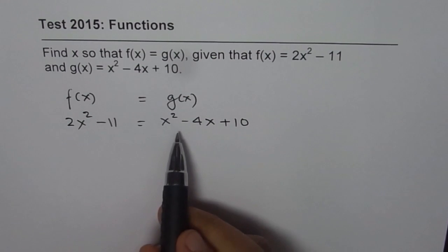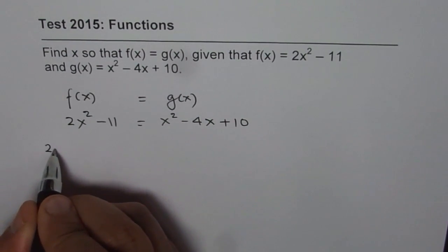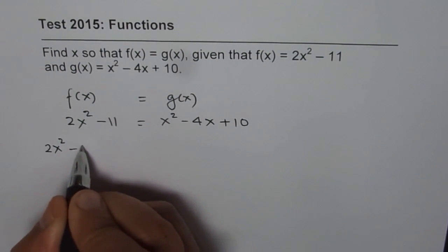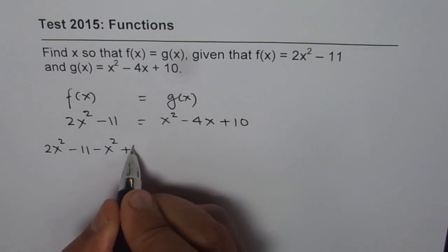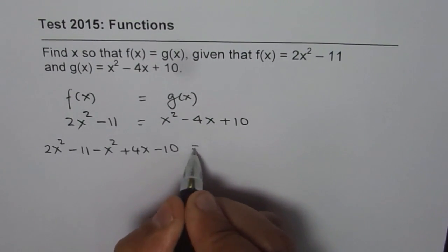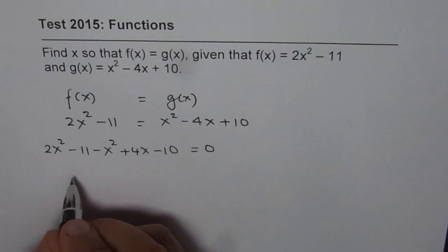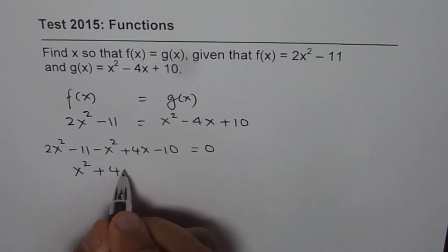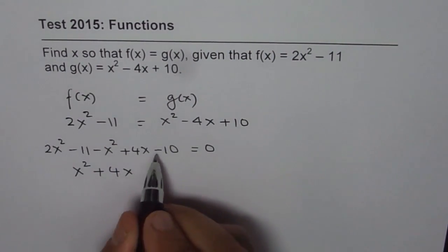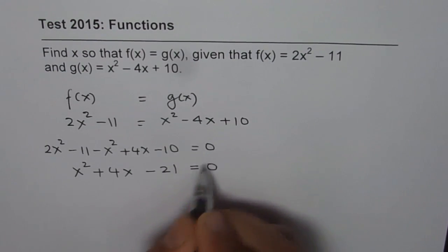To find the solution, let's bring all the terms to the left. So we have 2x squared minus 11 minus x squared plus 4x minus 10 equals 0. 2x squared minus x squared is x squared plus 4x minus 11 and minus 10 is minus 21 equals 0.